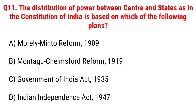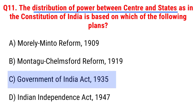Next question: the distribution of power between the centre and states as in the Constitution of India is based on which of the following plans? Option A, Morley-Minto Reforms 1909; B, Montague-Chelmsford Reforms 1919; C, Government of India Act 1935; D, Indian Independence Act 1947. The right answer is Option C, Government of India Act 1935.